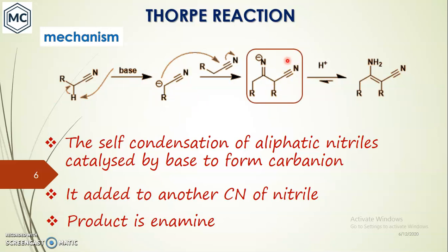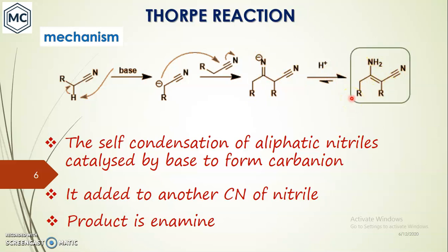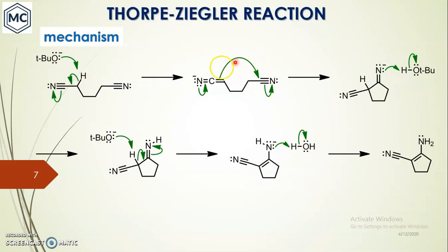The alpha carbon is added to the CN carbon, so the CN triple bond becomes a double bond and it becomes negatively charged. On protonation, this gives an NH, that is an imine. This imine undergoes tautomerism to give an enamine.